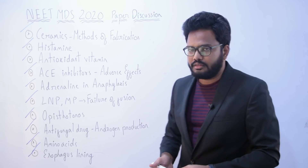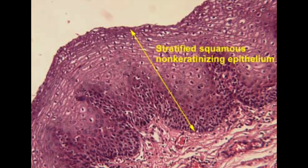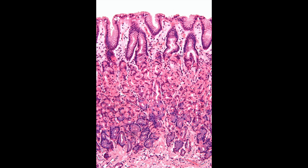Now let's look at which epithelium lines the esophagus. The esophagus has stratified squamous epithelium. The mucosa lining the GI tract has three layers: epithelial lining, lamina propria and muscularis mucosa. The inner surface of the mouth, tongue, pharynx and esophagus have stratified squamous epithelial cells, whereas the stomach, small intestine and large intestine have columnar epithelial cells.